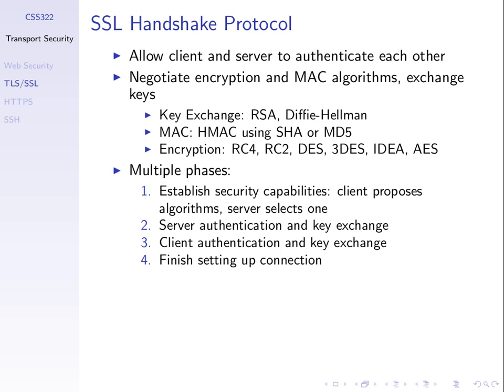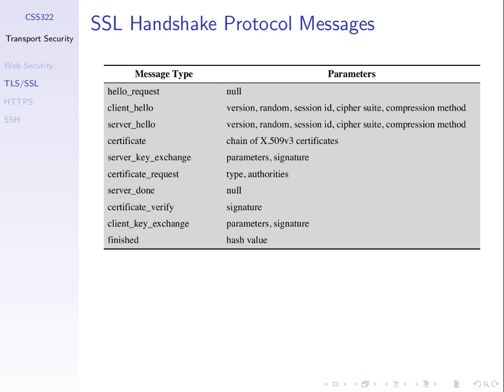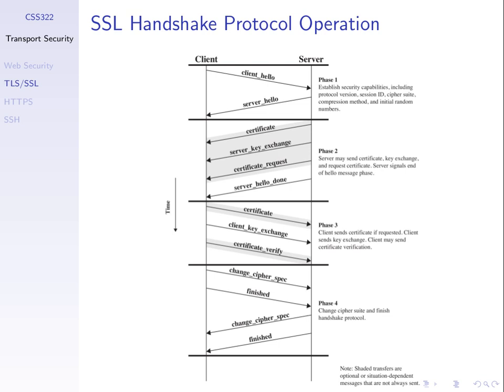The handshake protocol has four main phases. First, the client and server advertise their capabilities — the client says which algorithms it supports, the server selects one. Second, we authenticate the server and exchange keys. Third, optionally, the server requests client authentication and they perform a key exchange to establish a secret key for later encryption. Fourth, messages are sent to say the handshake is finished and they can now send encrypted data.